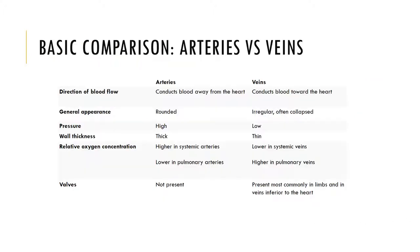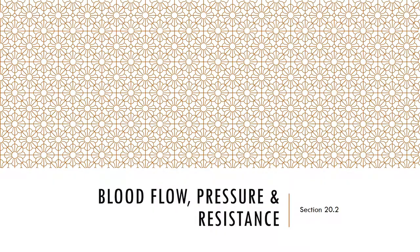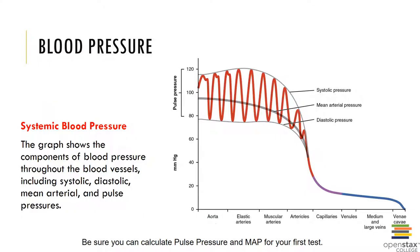Here we can see a basic comparison of arteries versus veins. Let's look at blood flow, pressure, and resistance to examine some of the physiological concepts related to the function of our cardiovascular system. Blood pressure is defined as the force per unit area exerted on the wall of a blood vessel by the blood contained within it, and pressure is measured in millimeters of mercury.